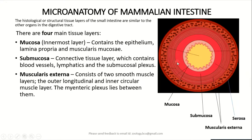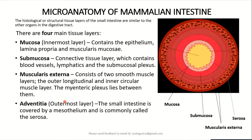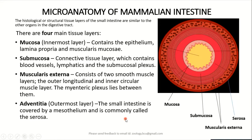Between the two layers of muscles there is also the myenteric plexus, which is a nerve plexus. The outermost layer of the wall of the intestine is called the serosa or adventitia. The small intestine is covered by epithelium, which is commonly also called the serosa.